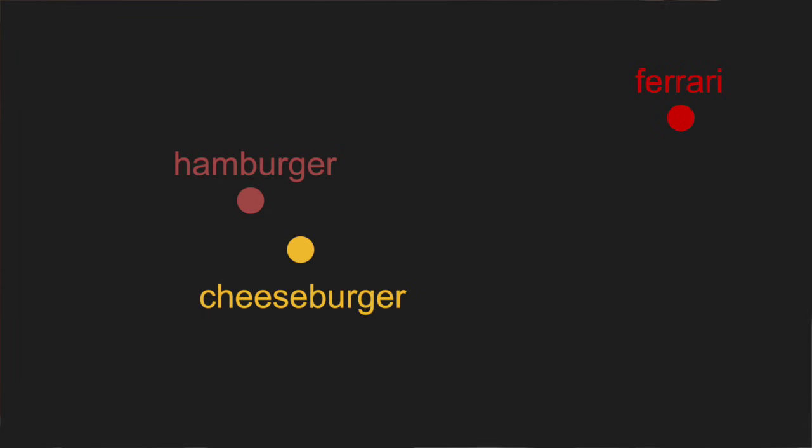For a word embedding to be good, we require that the vectors carry some meaning. So if I put in hamburger and cheeseburger, I want those vectors to be very close to each other because they're very related words. Whereas if I put in something like Ferrari—a kind of car, totally unrelated to hamburger—I want the vector for Ferrari to be far away from the vector for hamburger. We want the closeness of these vectors to resemble the closeness of the words they represent.